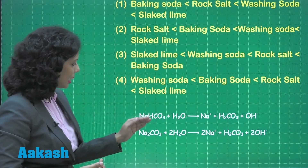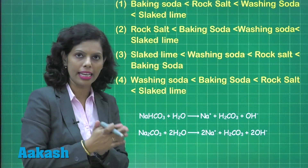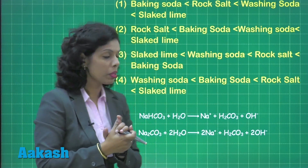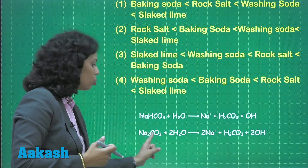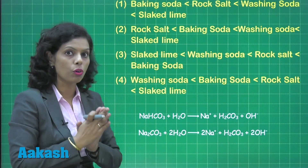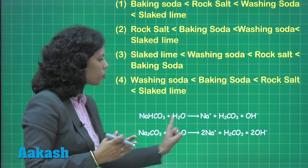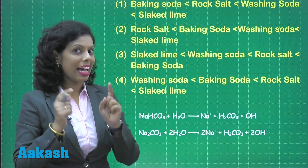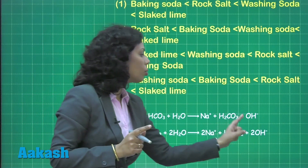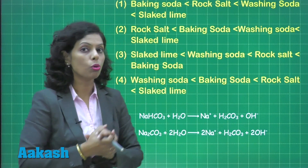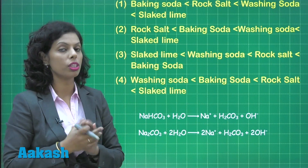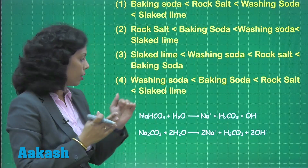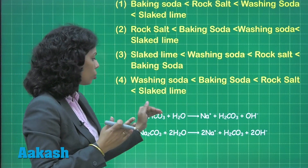When baking soda (NaHCO₃) is hydrolyzed, it forms OH⁻ ions. Na₂CO₃, which is washing soda, produces two OH⁻ ions per molecule, meaning it has a higher pH value because it forms a more basic solution.